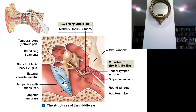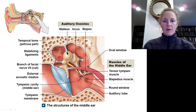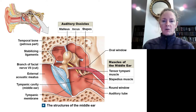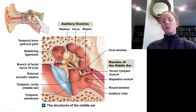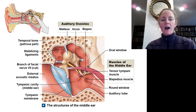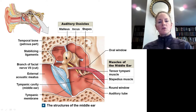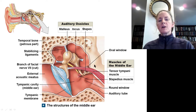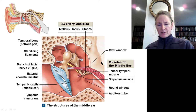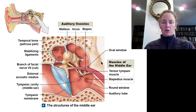As the tympanic membrane vibrates, it vibrates the malleus. The malleus pushes on the incus, which in turn pushes the stapes up against the oval window. In the internal ear, we'll see how sound pressure waves are converted into mechanical pressure, then into fluid pressure waves, and then how signal transduction occurs from there.